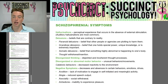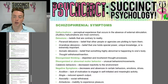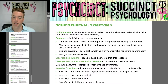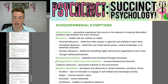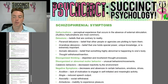Schizophrenia symptoms: Hallucinations are perceptual experiences that occur in the absence of external stimulation; auditory hallucinations are most common. Delusions are beliefs that are contrary to reality. Paranoid delusions are the belief that other people or agencies are plotting to harm you. Grandiose delusions are the belief that one holds special power, unique knowledge, or is extremely important. Somatic delusions are the belief that something highly abnormal is happening to one's body. There is also thought withdrawal and insertion, and disorganized thinking — disjointed and incoherent thought processes. Disorganized or abnormal motor behavior refers to unusual behaviors and movements, including catatonic behaviors, which are decreased reactivity to the environment.